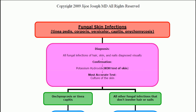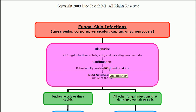We're going to diagnose them visually. All fungal skin infections of the hair, skin, and nails are diagnosed visually. And how are we going to follow this up? We're going to confirm it with potassium hydroxide, or KOH test of the skin. That's another word for potassium hydroxide — you can see either one of them on the test.